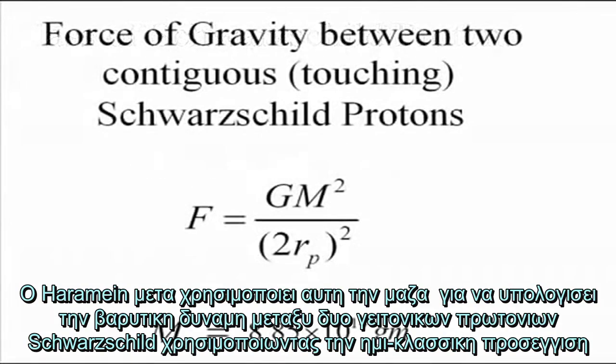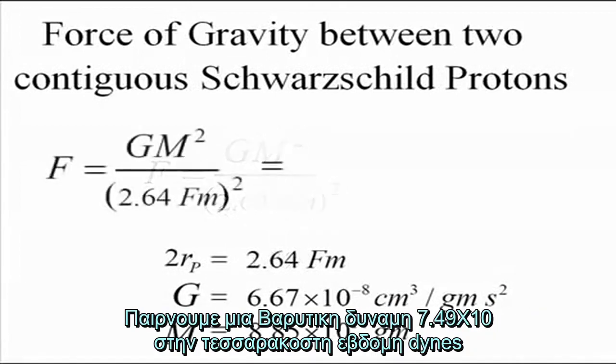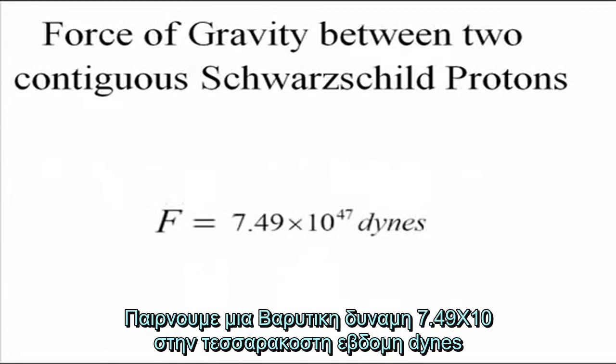Haramein then uses this mass to calculate the gravitational force between two contiguous Schwarzschild protons using the semi-classical approach. We yield a gravitational force of 7.49 times 10 to the 47th dynes.